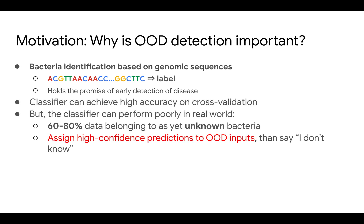The reason is that a lot of real data belongs to unknown bacteria — those bacteria are not in the training data distribution. We call this out-of-distribution data, or OOD.